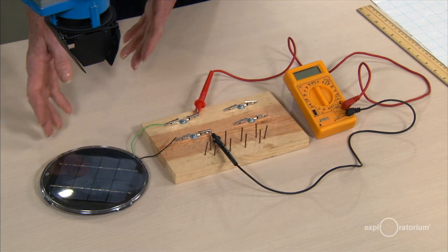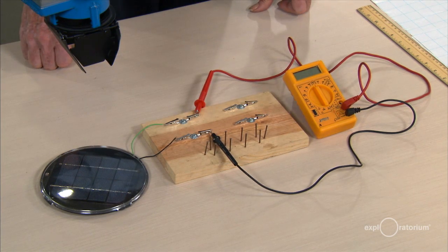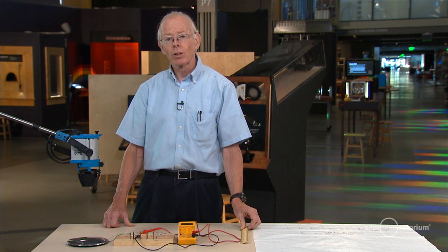To do this, you'll need a solar cell, some connecting wires, a meter that can measure voltage and current, as well as a ruler to measure the area of the solar cell.